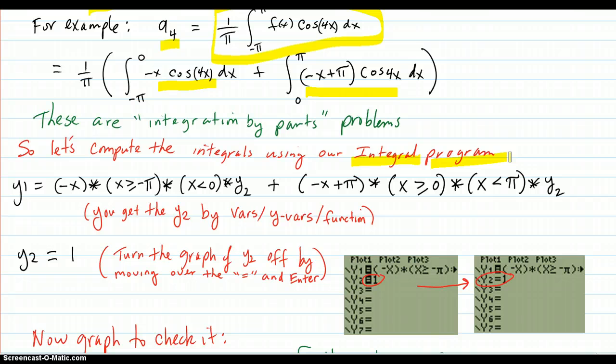So what do we put in there? Negative x on x greater than or equal negative pi times x less than zero times y2. I'll explain that in a second. So this is your interval. That's an and, means it has to be both this and that, in order for this to have this value. Plus, so it'll be zero when x is outside of that. Then you're going to add on. Here's your other piece.